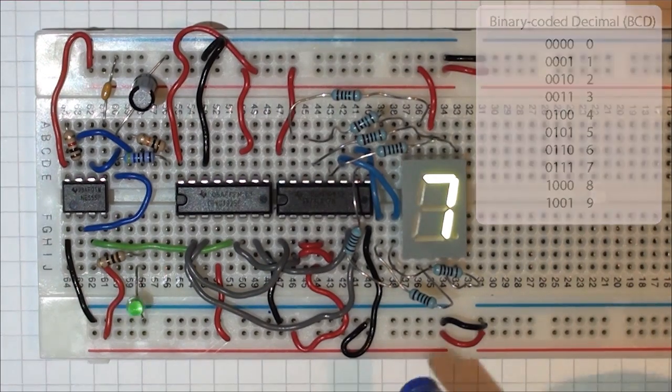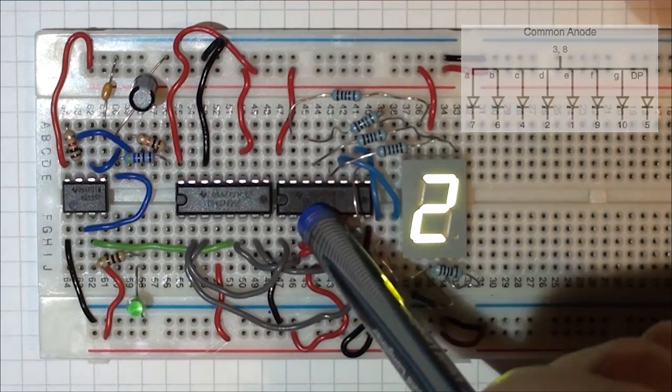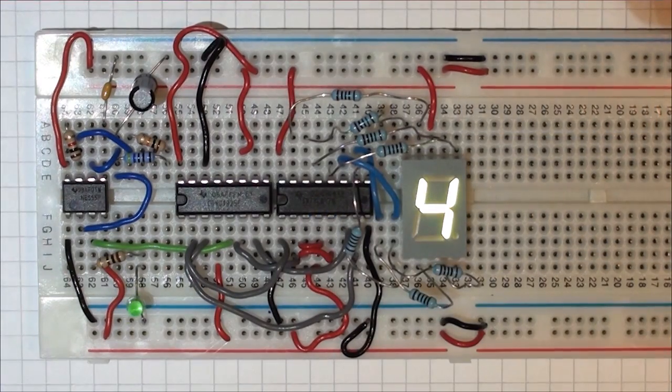Everything is as you would expect. It's a common anode 7-segment display, and it's a 7447, which means that they work very well together.